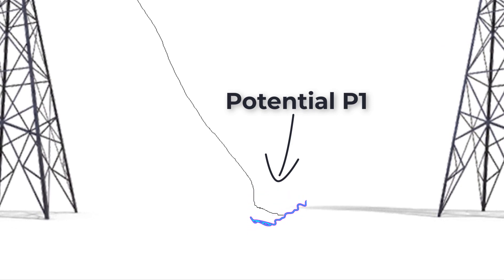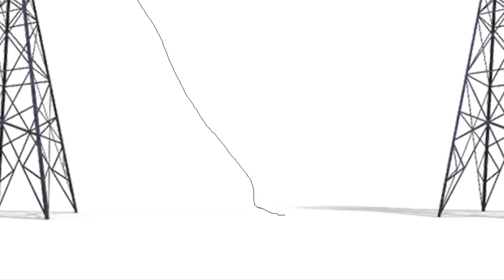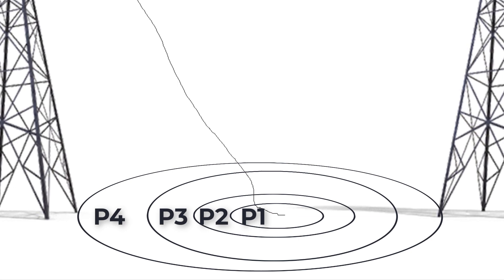This potential value will be decreased as we move away from the center of the fault. We can imagine here invisible circles of different potential values, and the touching point is the center of these circles.